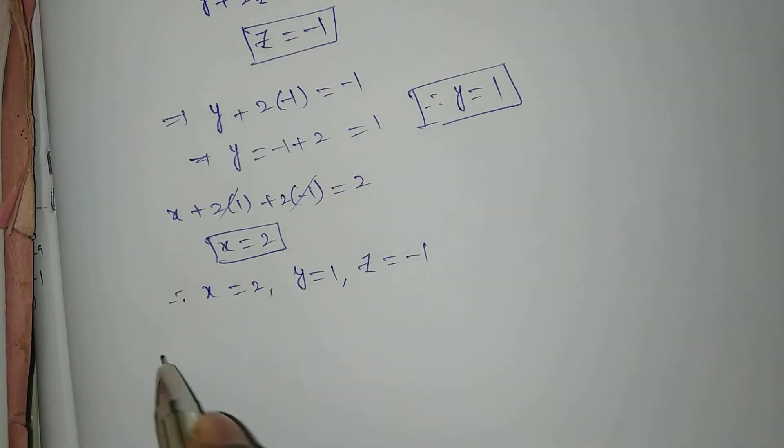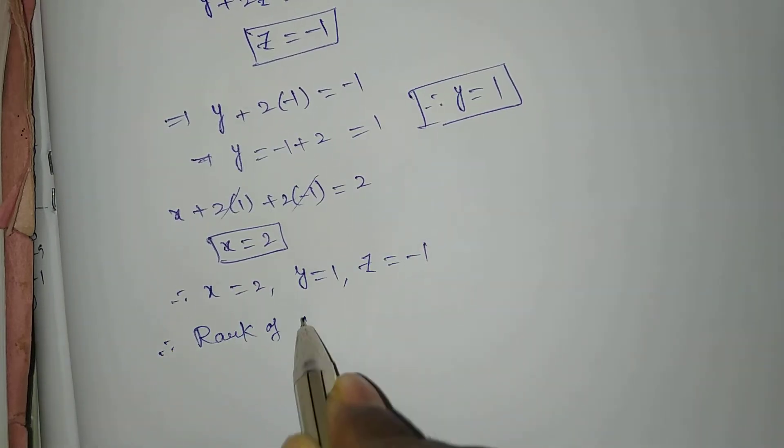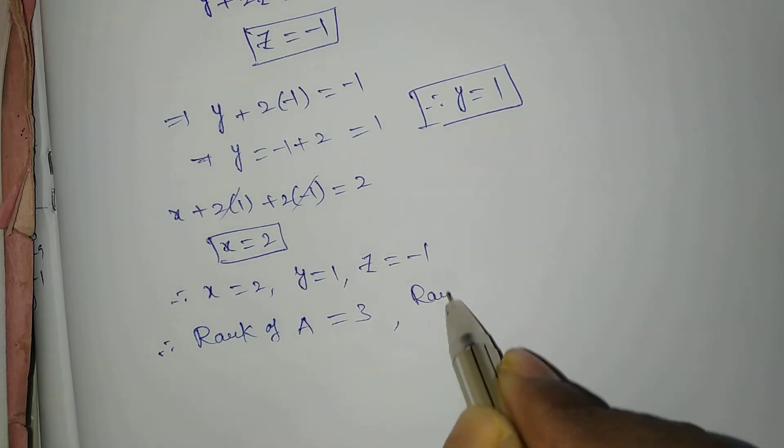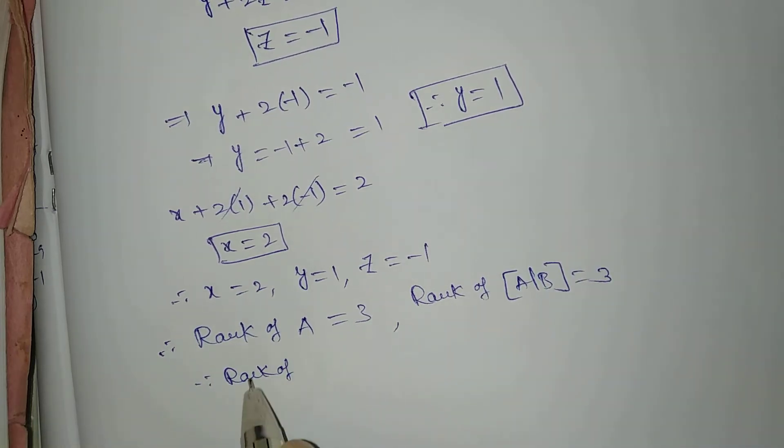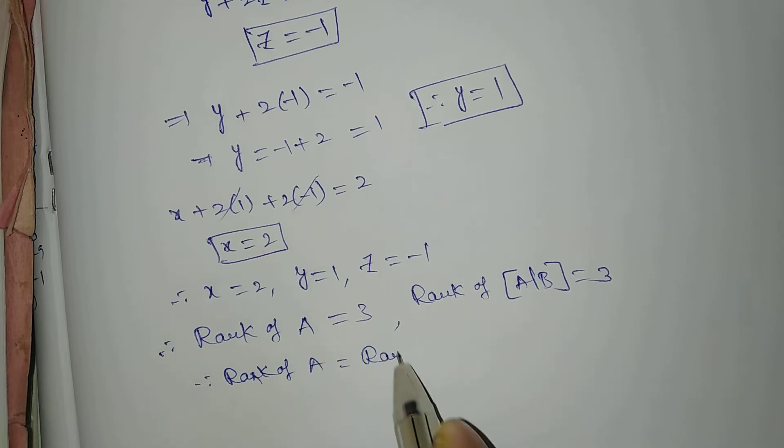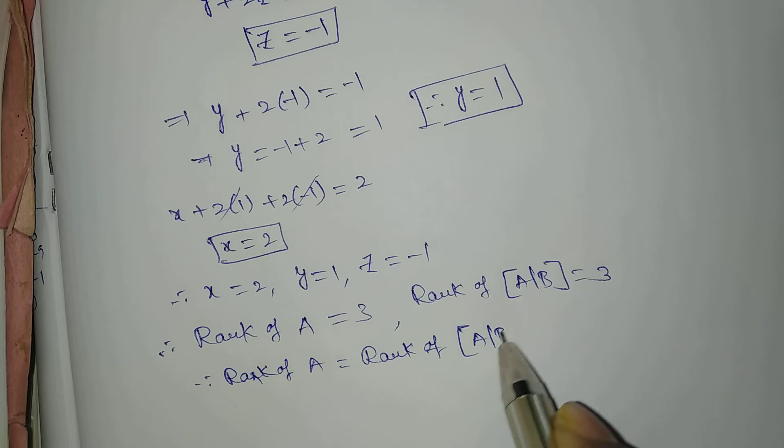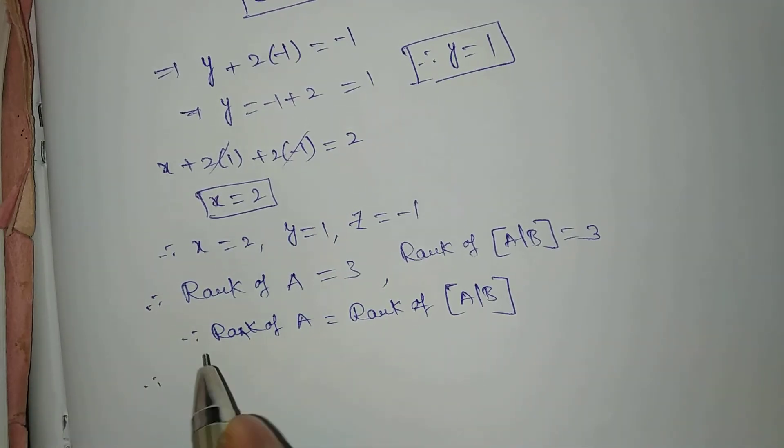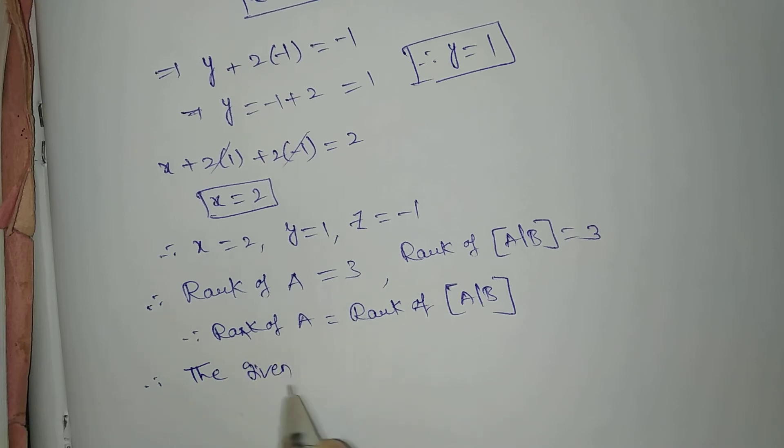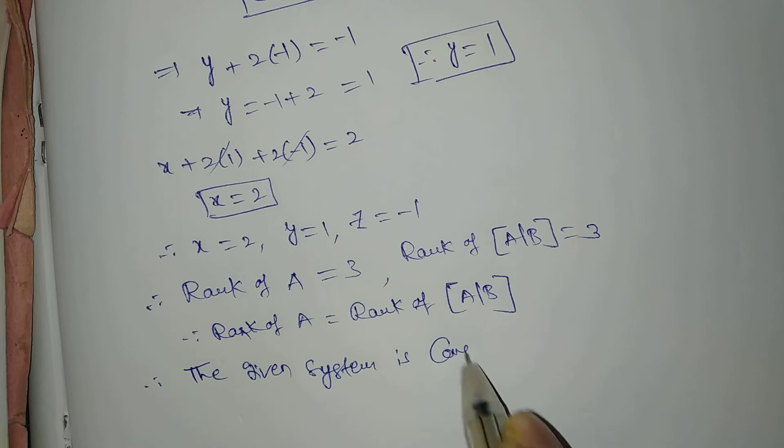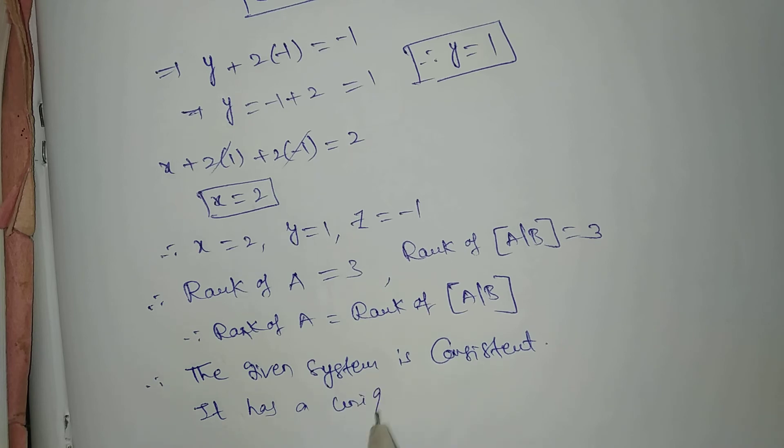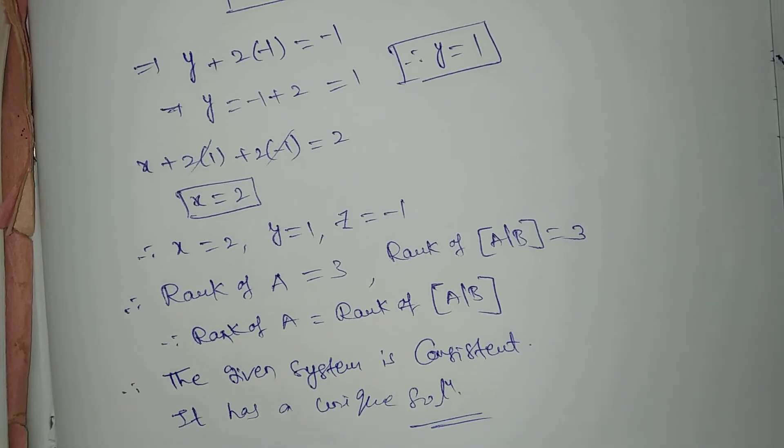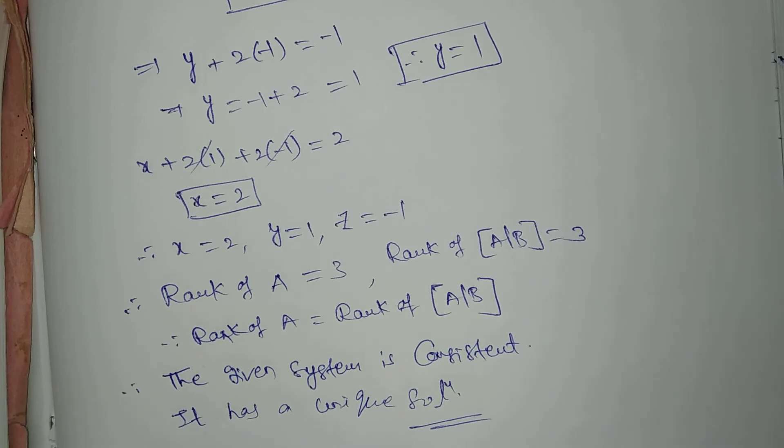Therefore, x equal to 2, y equal to 1, z equal to minus 1. Therefore, rank of A equals rank of A given B. Therefore, the given system is consistent. It has a unique solution.